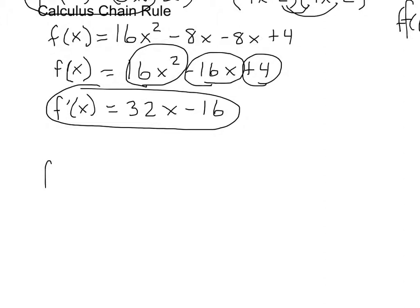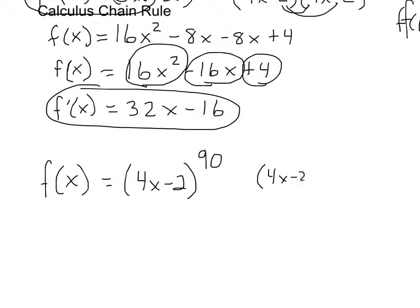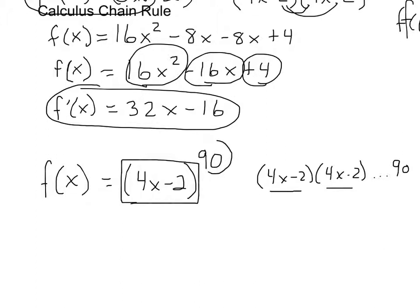But here's the problem — what if instead of (4x - 2)² we make it (4x - 2)⁹⁰? Are you going to rewrite it as (4x - 2) times (4x - 2) and do that 90 times? That's the issue, and that's the reason why we need the chain rule. We're not going to FOIL 90 times. The chain rule is useful when you have an inside function being raised to an outside exponent.